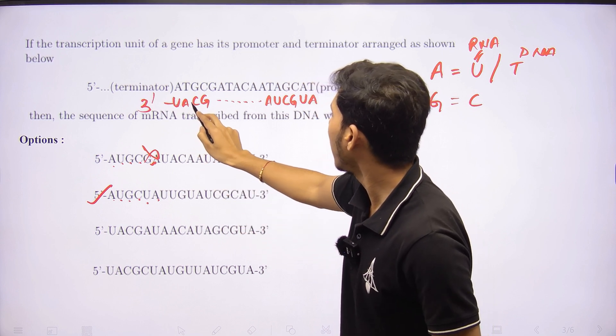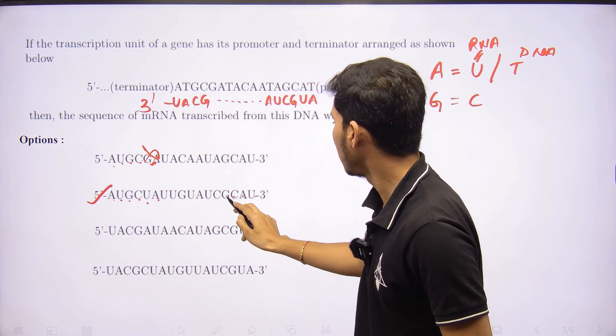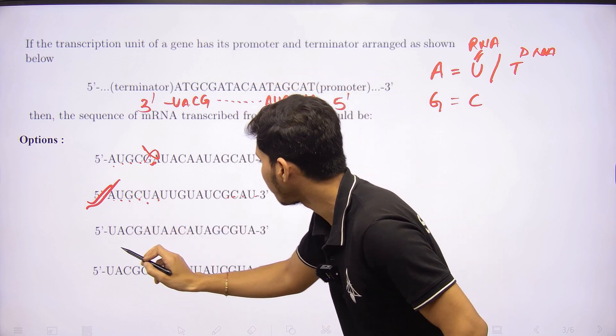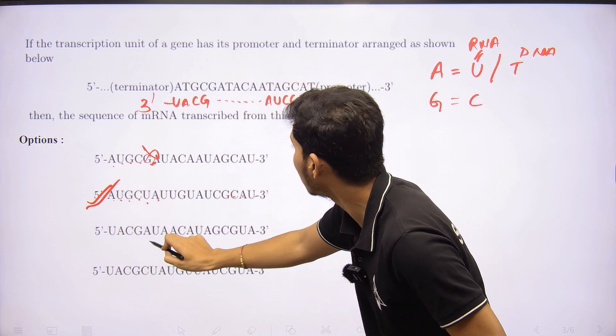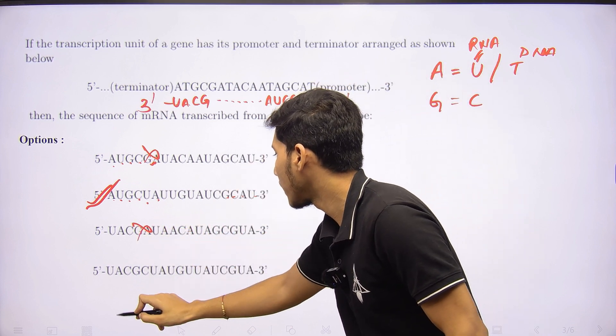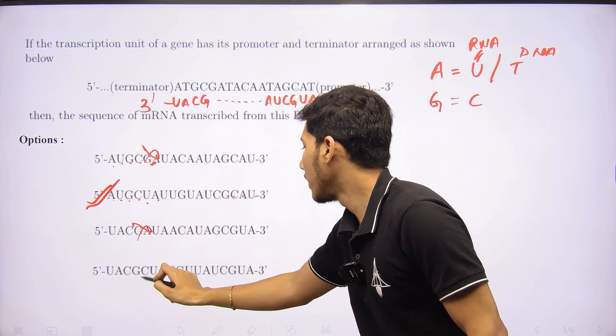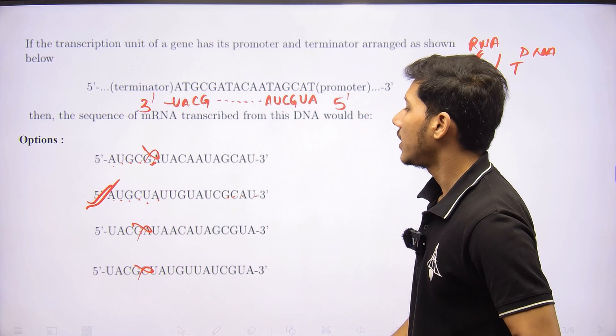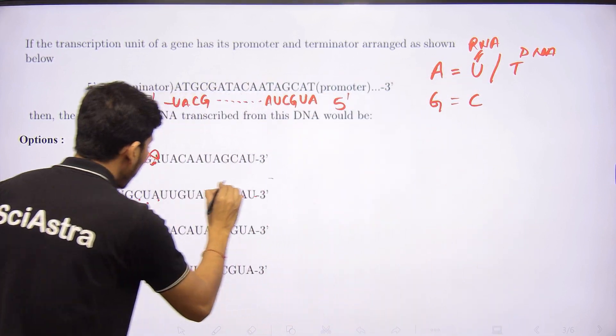Let's see the other options also. 5' AUACG - this is also incorrect. UACG again - this is also incorrect. So it means that option number two or option B is correct. This question was actually an easy one, but you should have knowledge of these concepts.